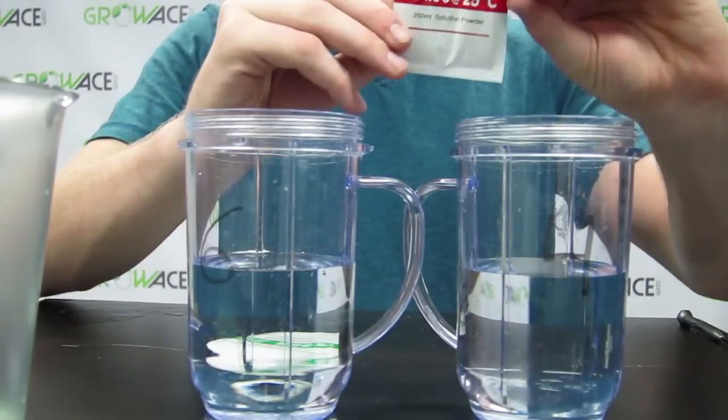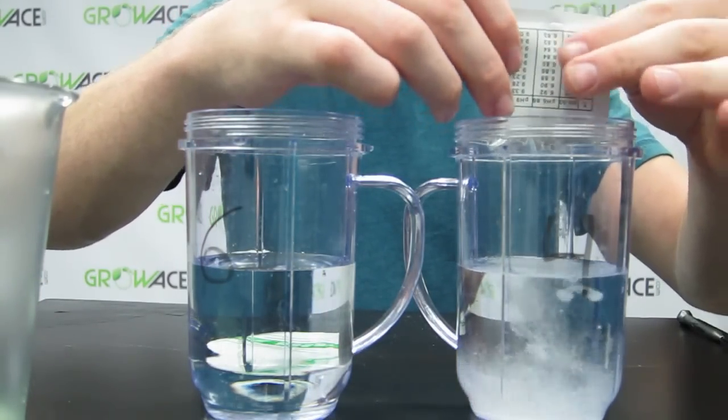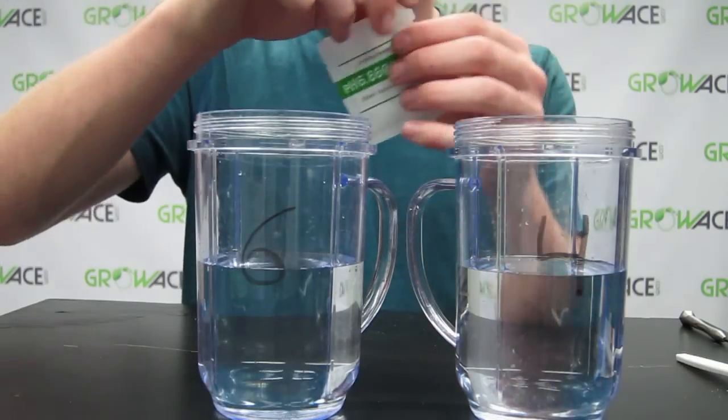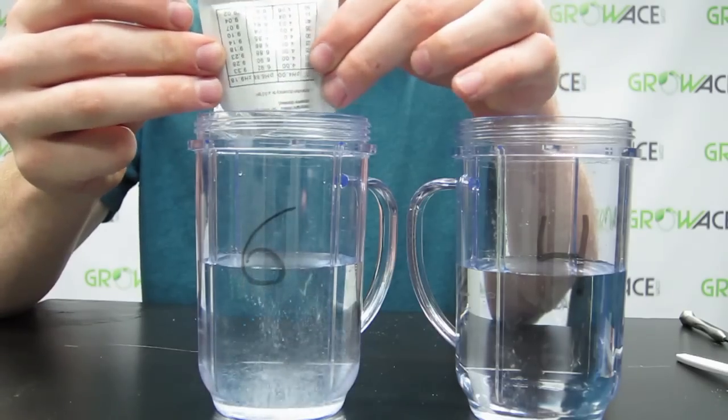Grab the number four cup and add the pH 4.0 buffer powder. Gently stir until it dissolves. Grab the number six cup and add the 6.86 pH buffer powder and gently stir until it dissolves.